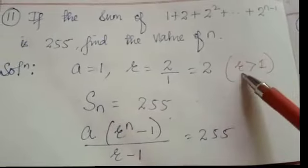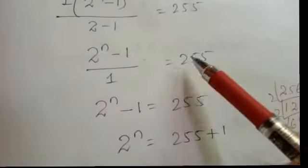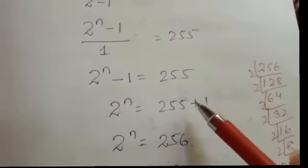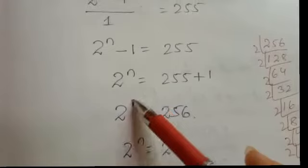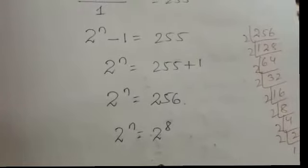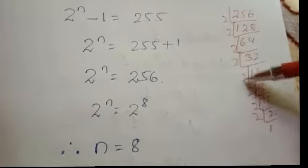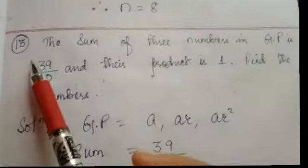Since r is greater than 1, we use this formula: sum equals a(r to the power n minus 1) divided by (r minus 1). Putting in the values, we get 2 to the power n minus 1 divided by (2 minus 1) equals 255, so 2 to the power n minus 1 equals 255. Write this minus 1 on the right-hand side: 255 plus 1 is 256. Express 256 as 2 to the power something — finding factors gives 2 to the power 8. So n equals 8.